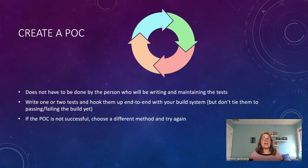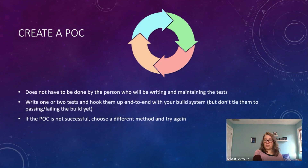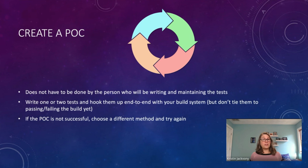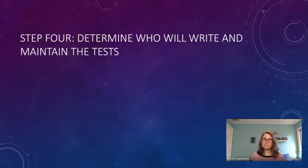Whoever does it, they should write one or two tests and hook them up end-to-end with the build system — but don't tie them to passing or failing the build yet. Just make sure you can trigger the tests from your build system, that the tests will run, that they connect to the right device, and that they return information about whether the test passed or failed. If the proof of concept is not successful, if you're running into issues you can't solve, go back, choose a different method, and try again.